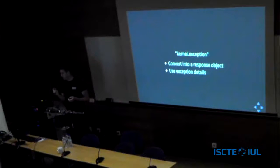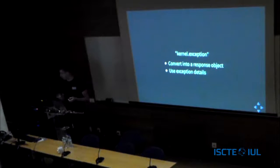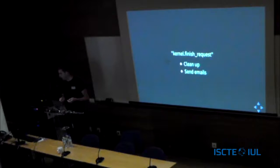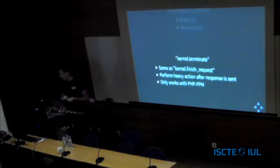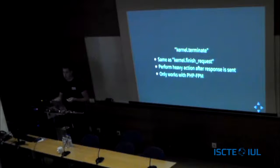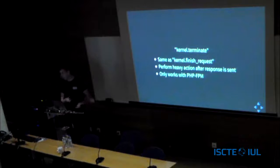Kernel exception lets you convert an exception into a response object, and use the exception details to help the user — like showing 'you probably entered the wrong password' for a security exception. Finish request is for cleanup or sending emails. Kernel terminate is similar but performs heavy-duty work after the page response is already sent to the client, so the user doesn't wait for a slow emailing service — though this only works with PHP-FPM.